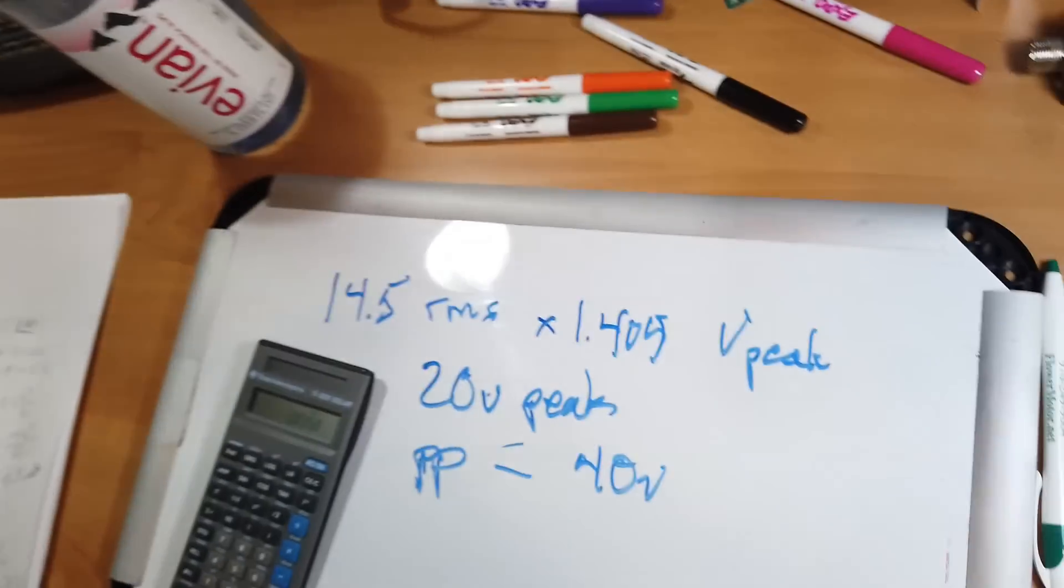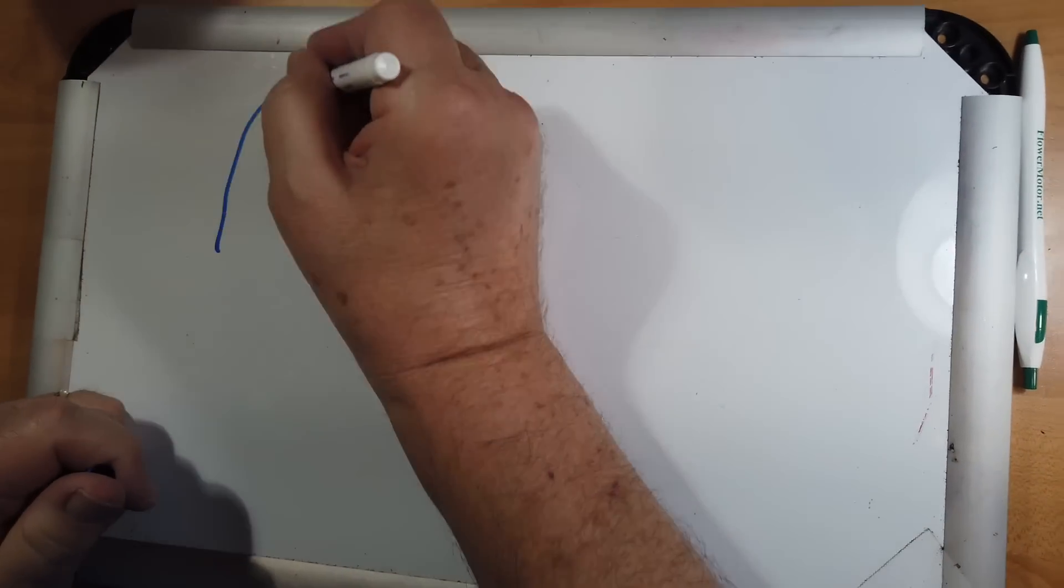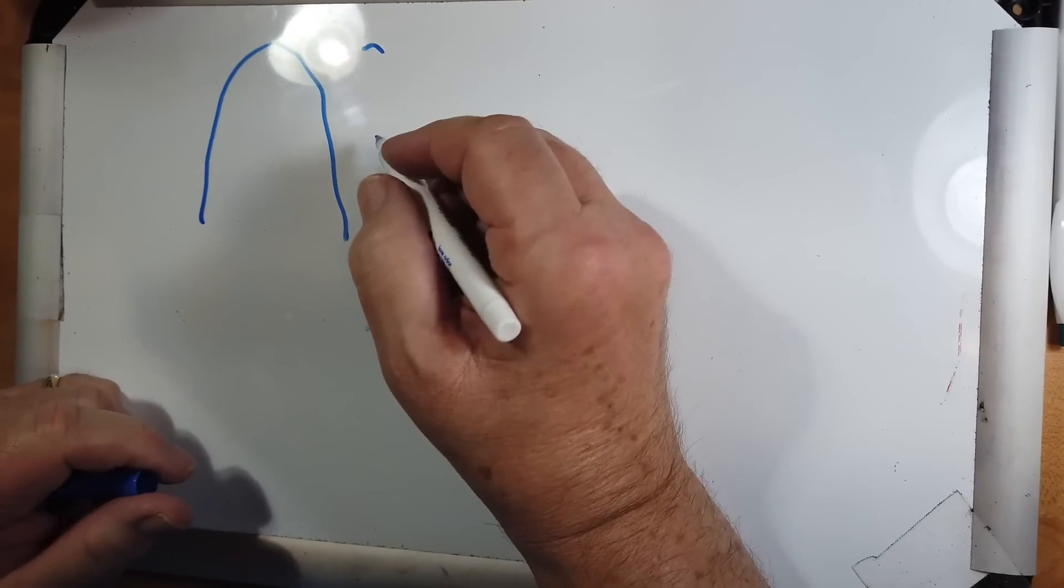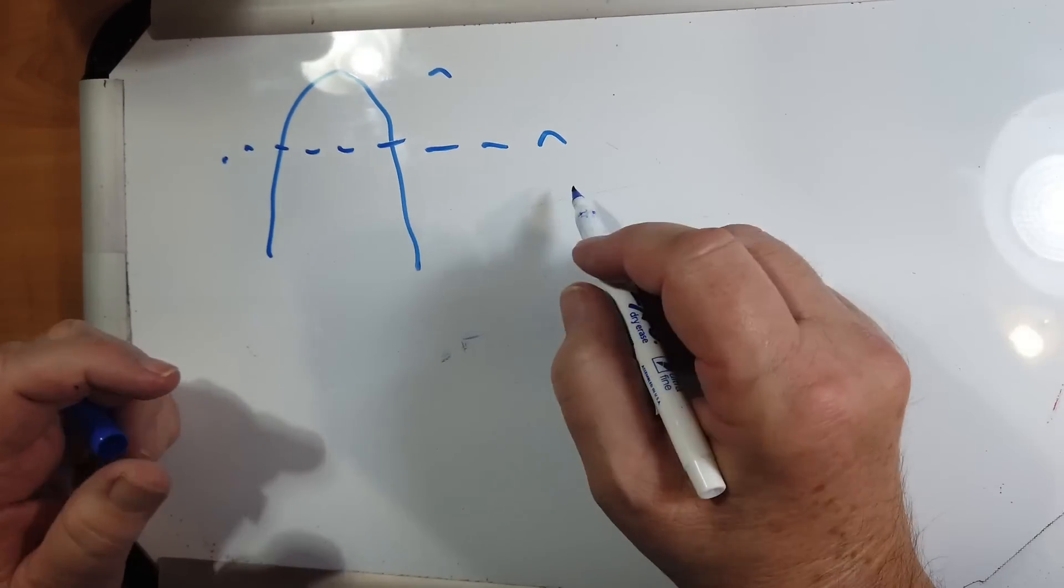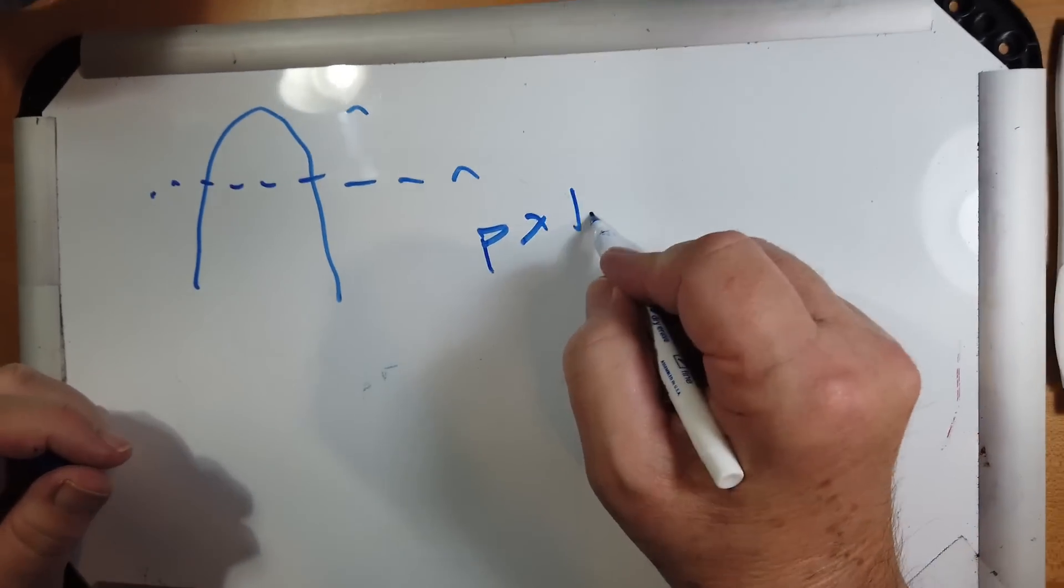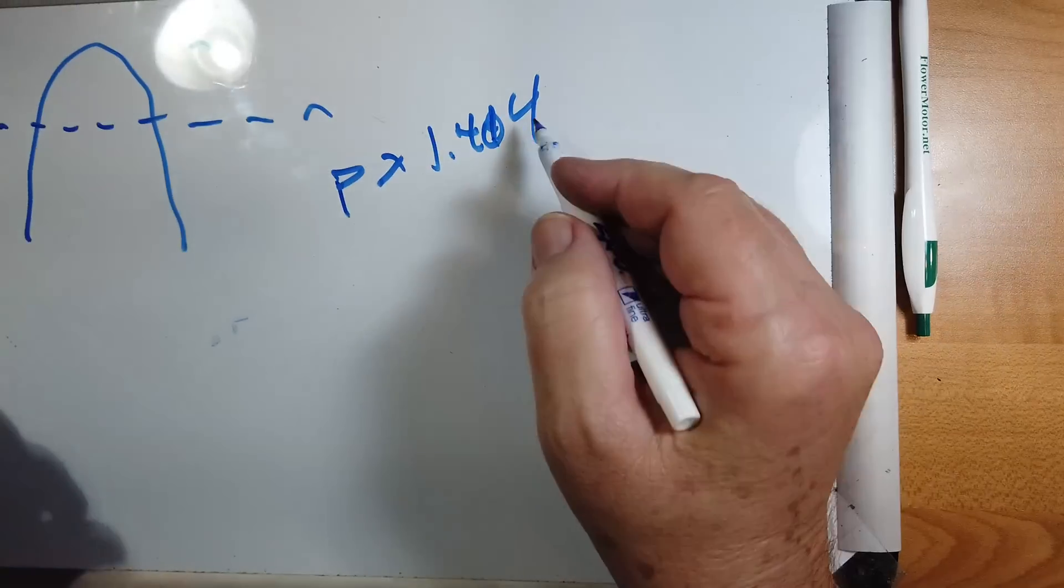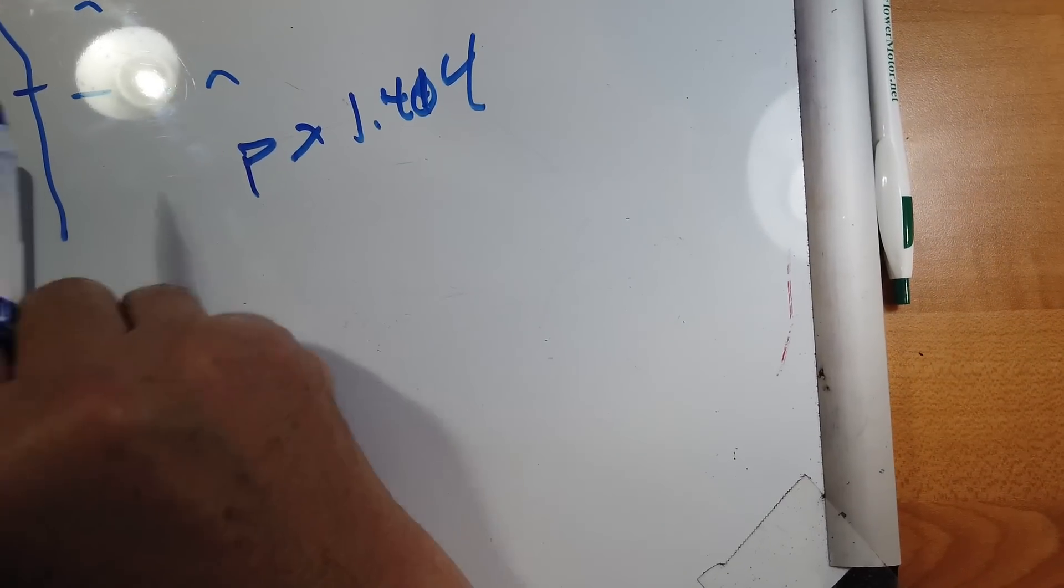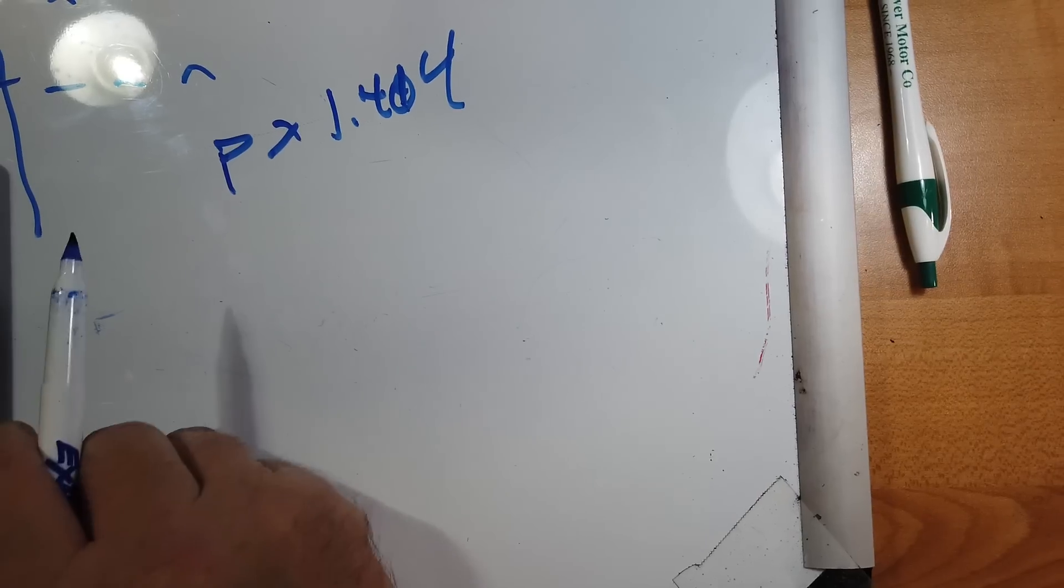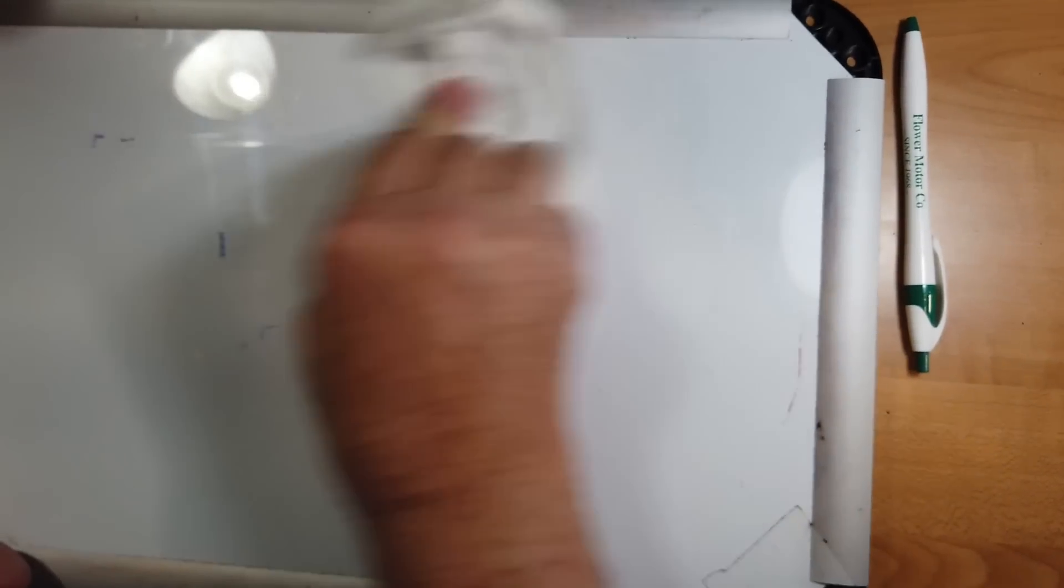Now, when we do calculations with Ohm's Law, we do it with RMS voltage. RMS stands for root mean square. And if you take the peak voltage of a waveform right here, you want to know what is the RMS. The RMS is the root mean square. And it turns out you take the peak times 1.414, and it's the square root of 2, to get to the RMS.